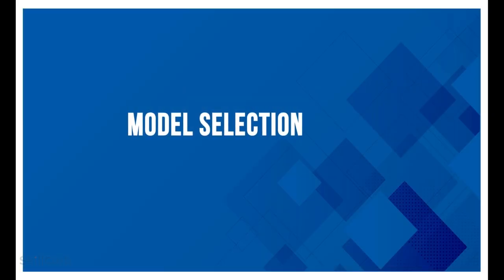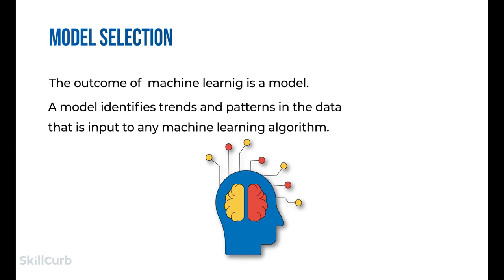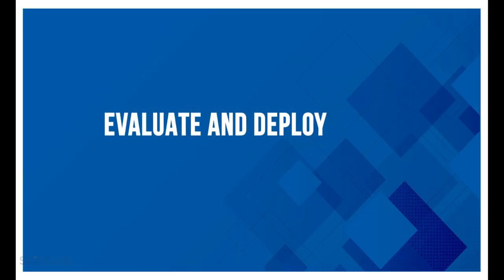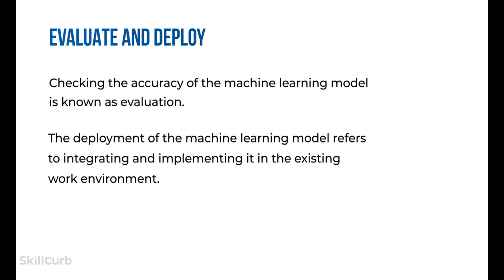After data visualization, we have the model selection process. The next step in our workflow is choosing the model. The model identifies trends and patterns in the data that is input to any machine learning algorithm. Our main goal is to train the best performing model possible using the preprocessed data. Finally, we evaluate the model — this is done against data that has never been used for training — allowing us to see how the model might perform against data it has not seen yet.